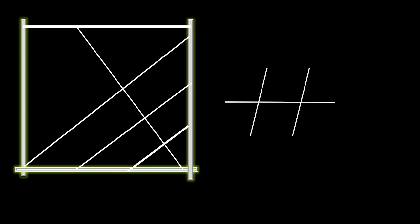Similarly, we know that for parallel lines and a transversal, there exist two angles which we call co-interior angles. If the lines are parallel — let me name these angles as A and B — the sum of these angles is equal to 180 degrees. We also call these angles supplementary.